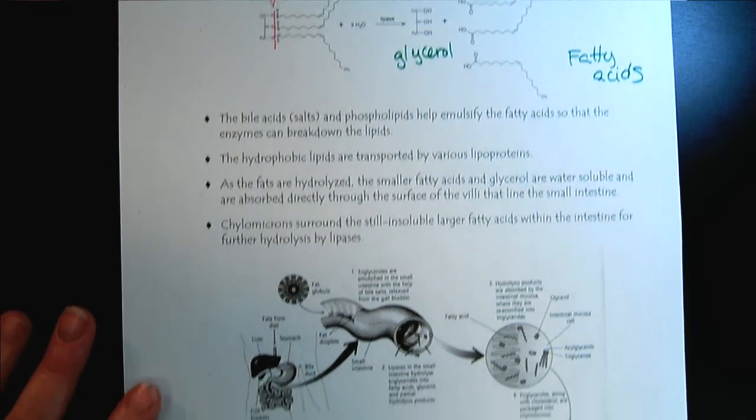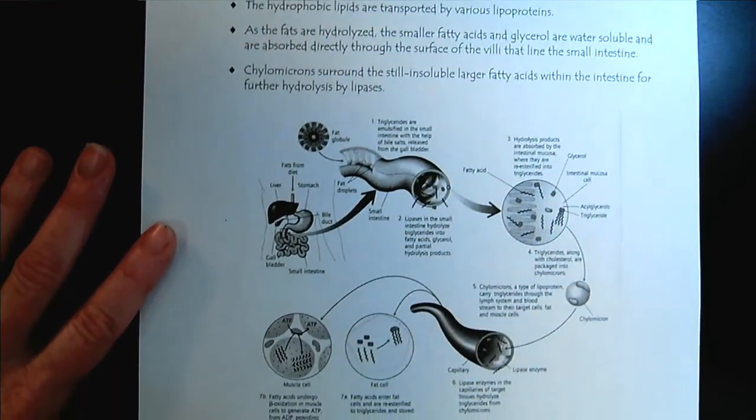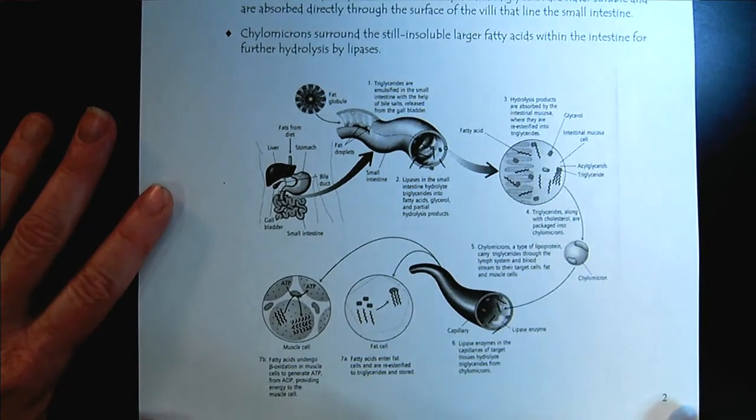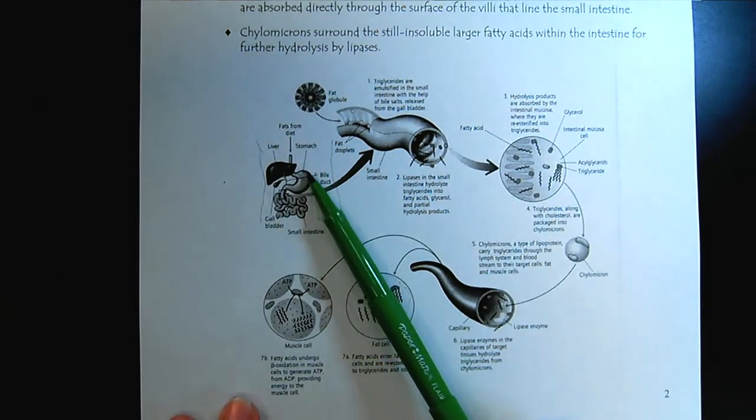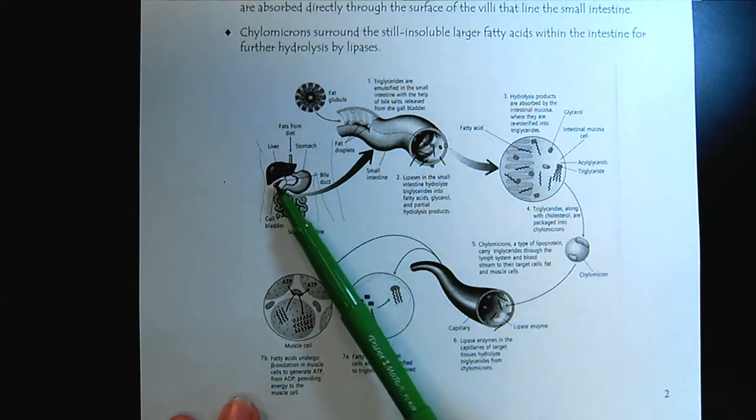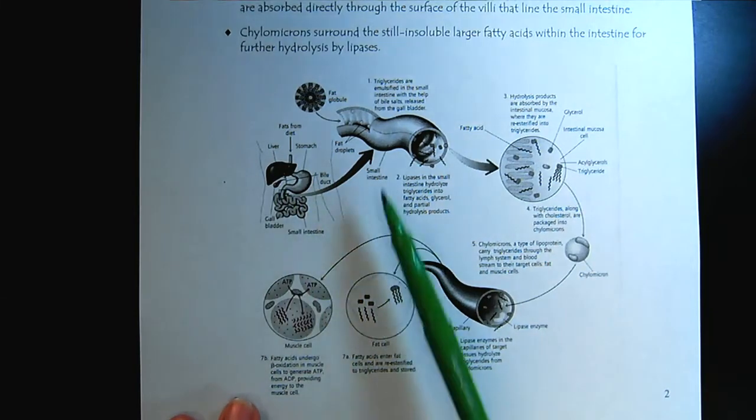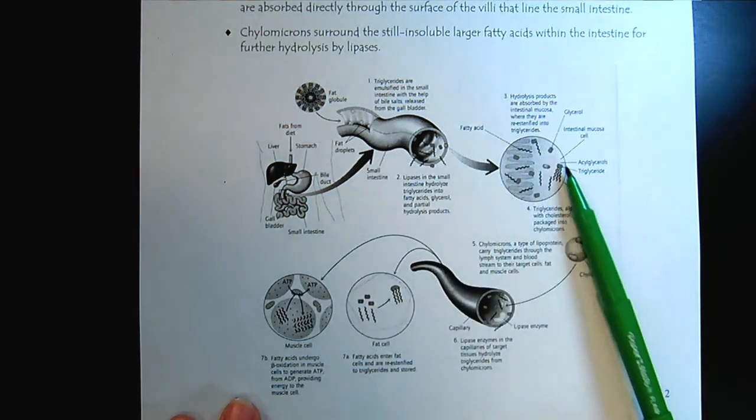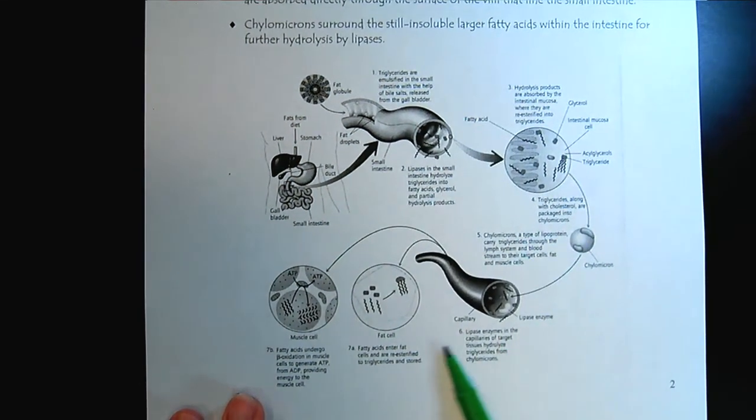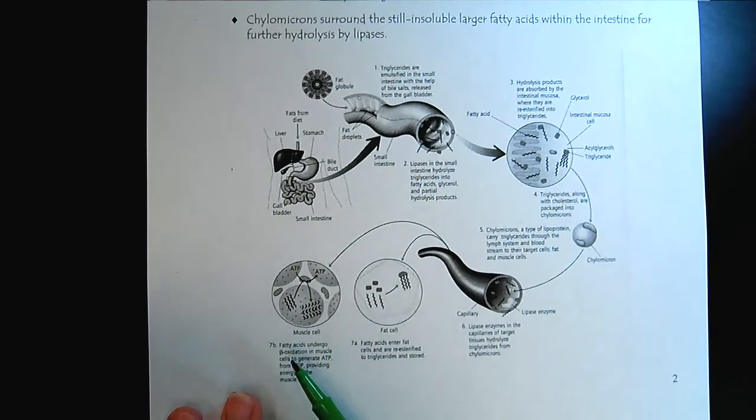Then they can be absorbed directly through the surface of the villi that line our small intestines. We just have to keep breaking it down smaller and smaller until we get to water soluble. The chylomicrons, remember, are the largest of the lipoproteins. And they surround the still insoluble larger fatty acids within the intestine to help facilitate further hydrolysis by the lipases.